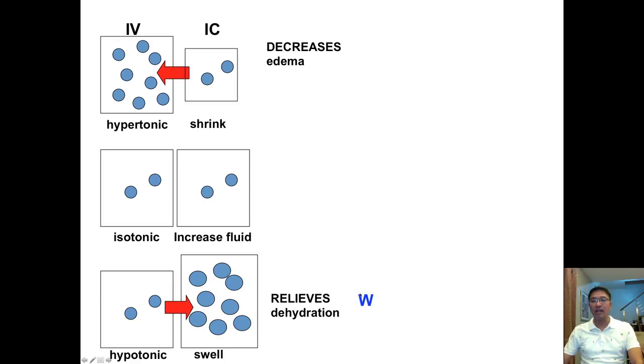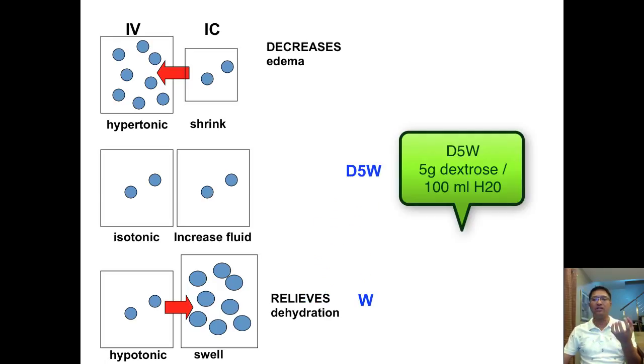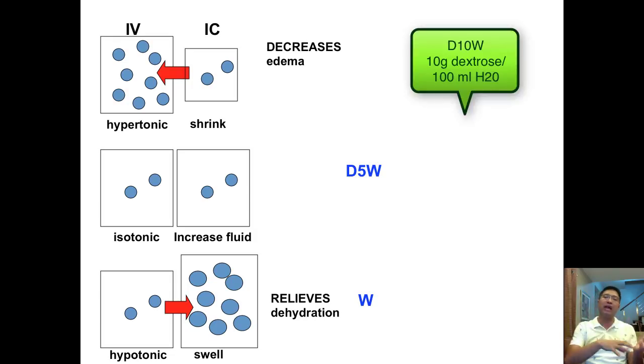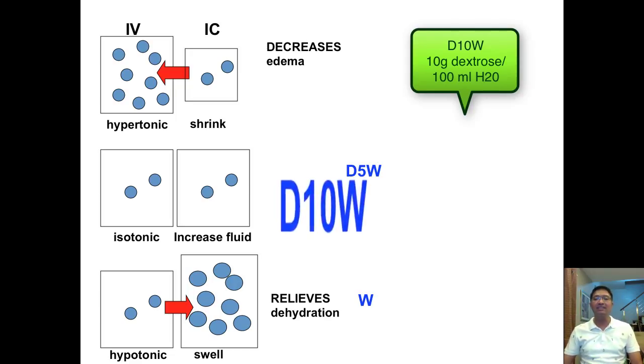D5W, it means that D5 dextrose 5% W means that water has 5 grams of dextrose per 100 ml. So that's 5%, 5 per 100, 5 grams of dextrose per 100 ml. That's D5W. If you have 10 grams of dextrose per 100 ml, that's not D5W. That's D10W, and D10W belongs to hypertonic.